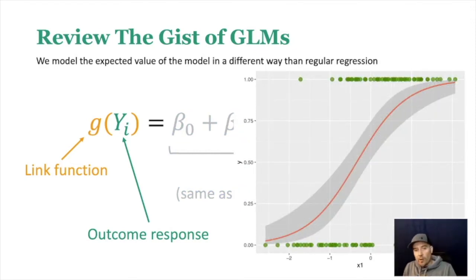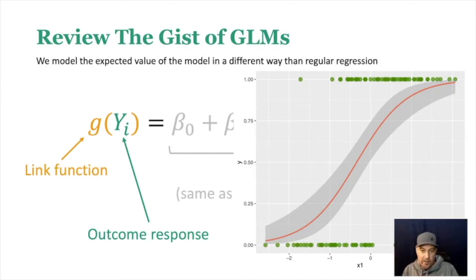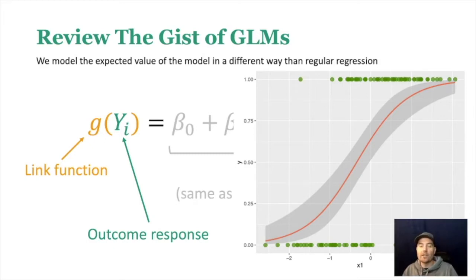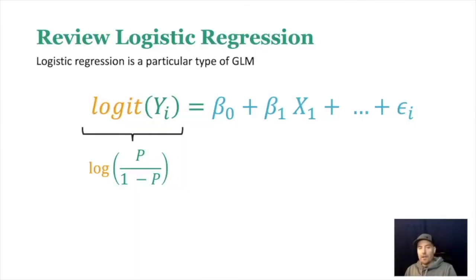In logistic regression, we work with this sigmoid curve — the S-shaped curve you see in this plot. This fits the data a lot better and has some nice probability attributes. The issue is that we need to give more consideration about how we interpret the information. Logistic regression uses what's called a logit link, which is the log odds.